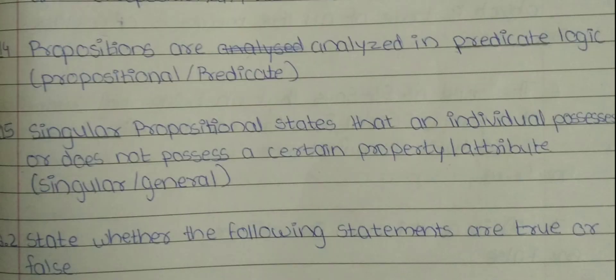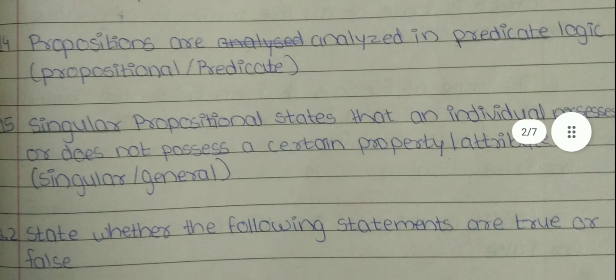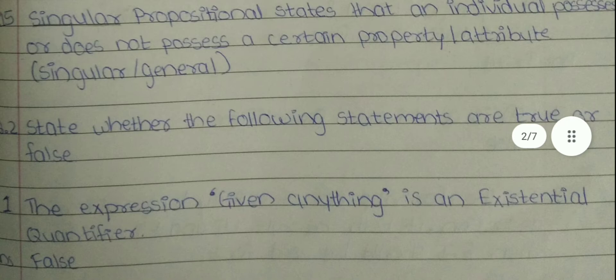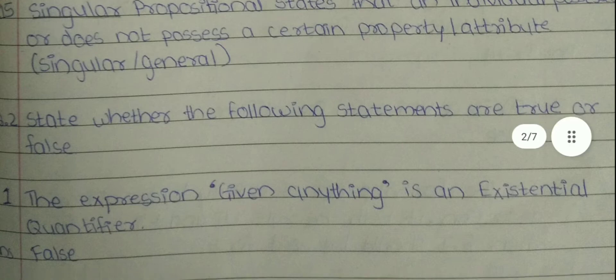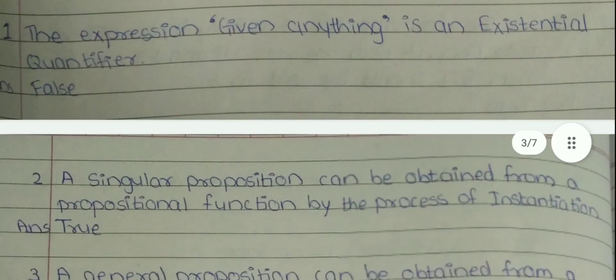15. Dash proposition states that an individual possesses or does not possess a certain property or attribute. The answer is singular. Question 2: State whether the following statements are true or false. 16. First, the expression 'give anything' is an existential quantifier. The answer is false.